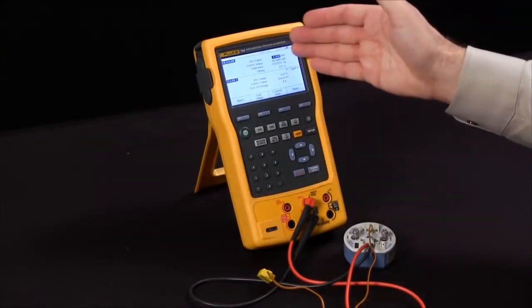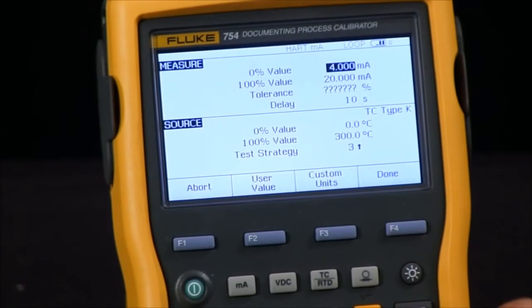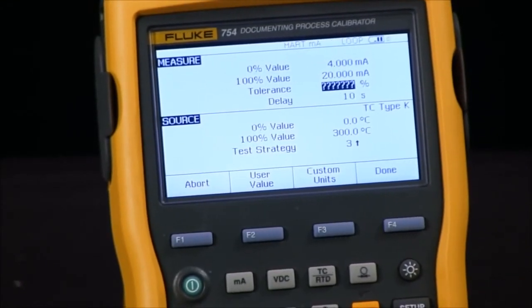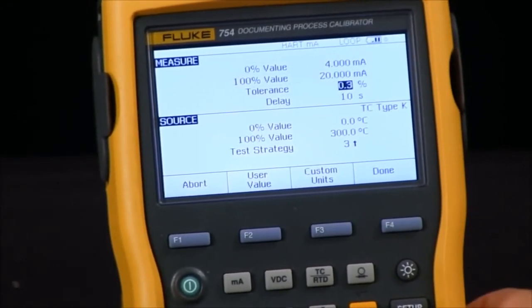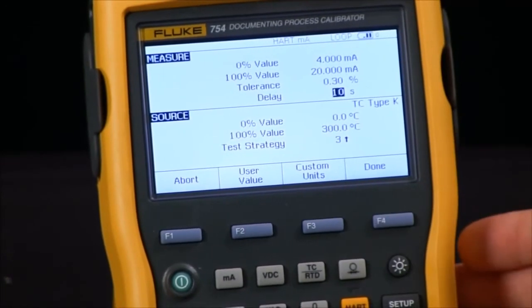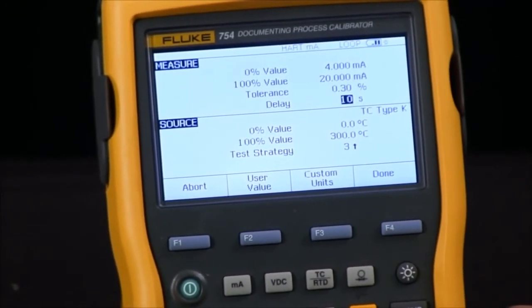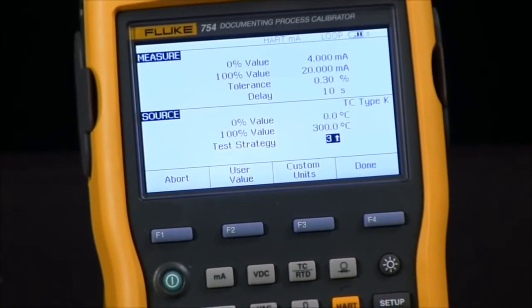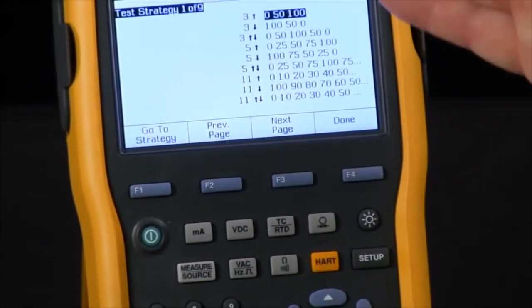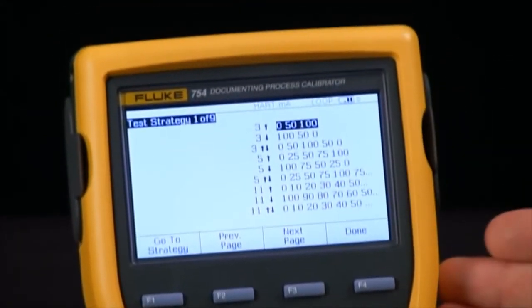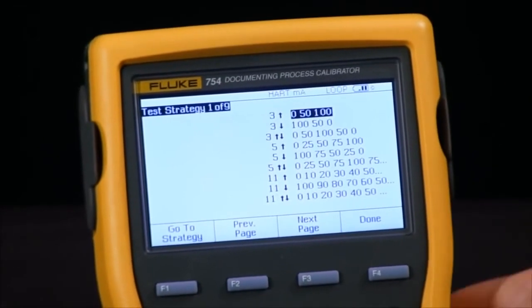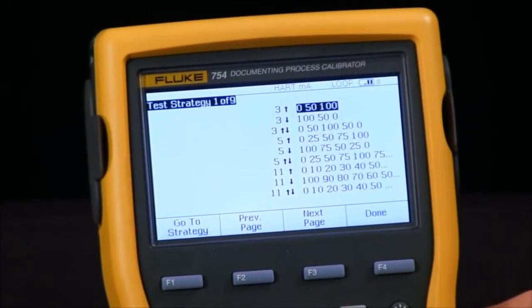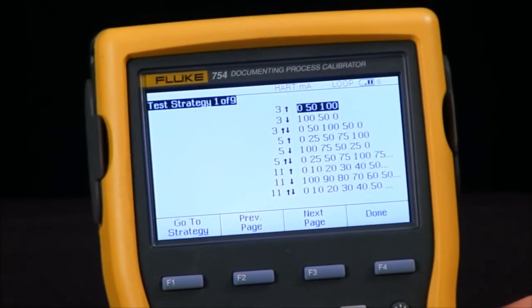Right now my upper and lower range, I'm going from a 4 to 20 milliamp. I will set my tolerance, we'll just select 0.3. My delay I can set to anything, I will leave it at 10 seconds, and there's my 0% and my span values. And then what kind of test do I want to do? I have a selection from a 3 up 3 down all the way up to an 11 up and down, or I can select any specific test called out by the manufacturer or by my specific process.